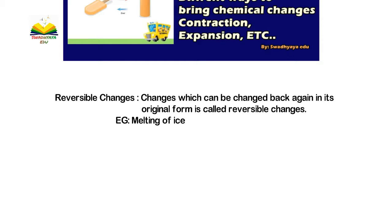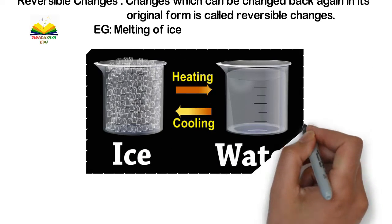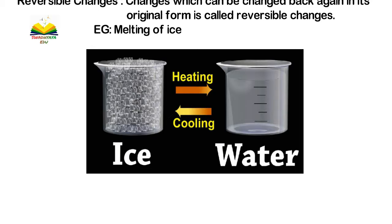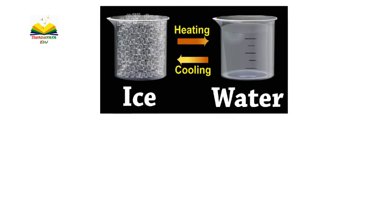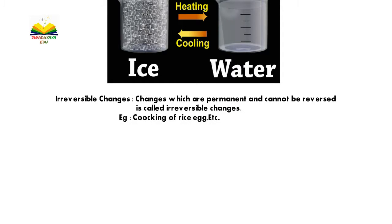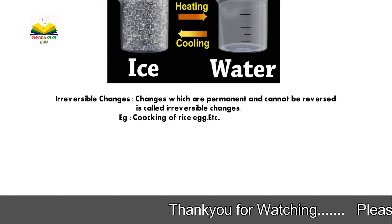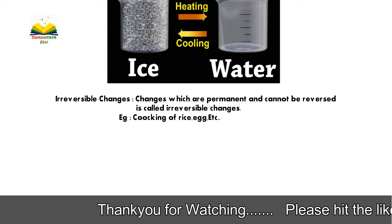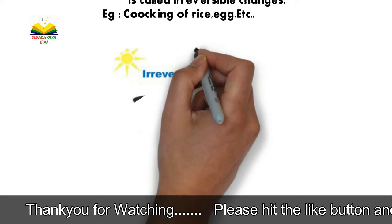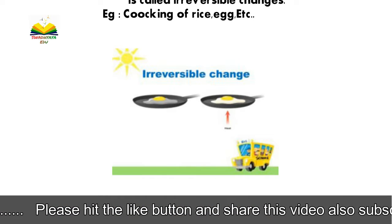For example, the building of an ice house — freezing water into ice — is a reversible process, as ice can be melted back to water. This is a reversible change. Irreversible changes are the opposite of reversible changes. For example, cooking — if you cook rice or an egg, you cannot bring it back to its original form. Any chemical change that cannot be reversed is also called an irreversible change.